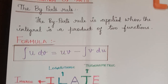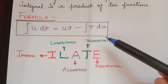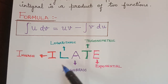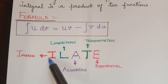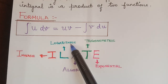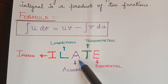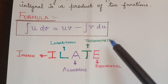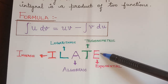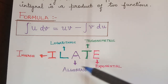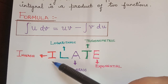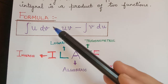There is a rule on how to choose u and v — a small thing to remember: I-L-A-T-E, where I stands for inverse, L stands for logarithmic functions, A stands for algebraic functions, T stands for trigonometric functions, and E stands for exponential functions. In this order we have to choose u, and whatever is left out will be chosen as dv.